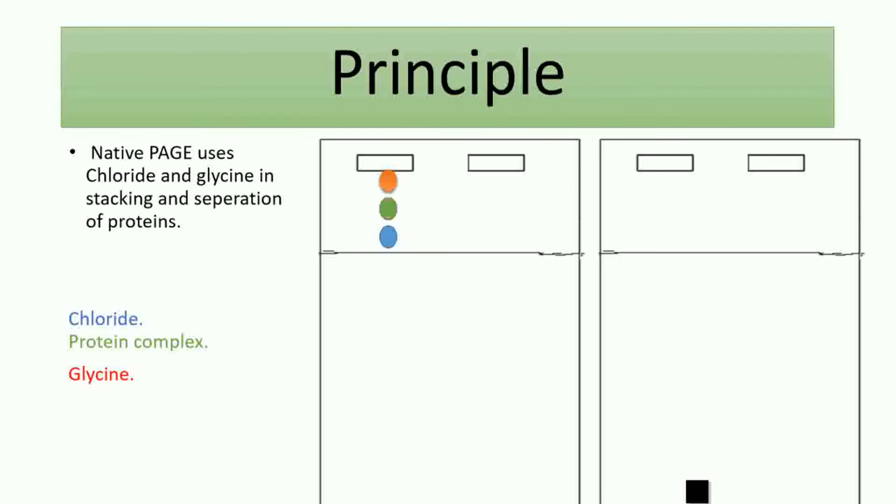Once those molecules reach the resolving gel, chloride ion remains fastest, followed by glycine which becomes much faster because of the alkaline environment of the resolving gel. The protein will be left behind.